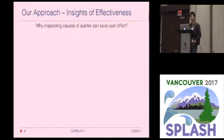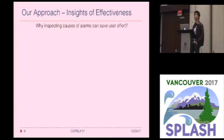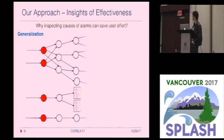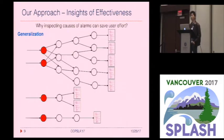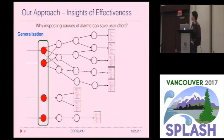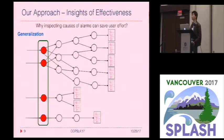You might be asking: are we actually putting more burden on the user? Because now the user also has to inspect the intermediate results of the analysis. Well, this concern is resolved by an observation called generalization. The idea is that in almost any program analysis, most of the false alarms are symptoms of very few common root causes. Asking Bob to inspect these very few common root causes will be cheaper than inspecting the final alarms.